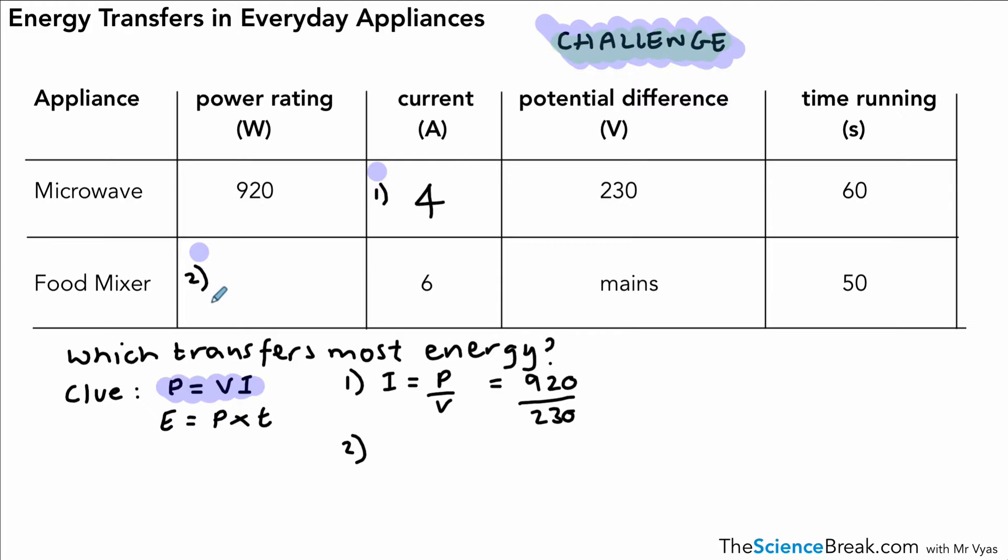For the second one, we want the power rating. And again, we use the same equation, but no rearranging required this time. So it's power is 230. It's running off the mains, and as we know, the mains is about 230 volts. So it's 230 times 6, which is our current, and that gives us an answer of 1380. So the power rating for the food mixer is 1380.